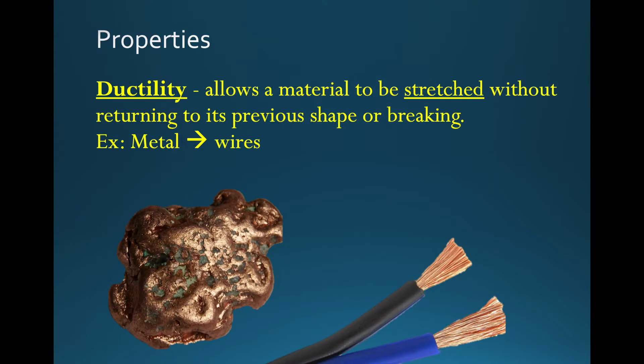Then we have ductility. That allows a material to be stretched without breaking it. And if you stop stretching it, it will retain that new shape. So an example would be copper — we stretch copper to make it into electrical wires.